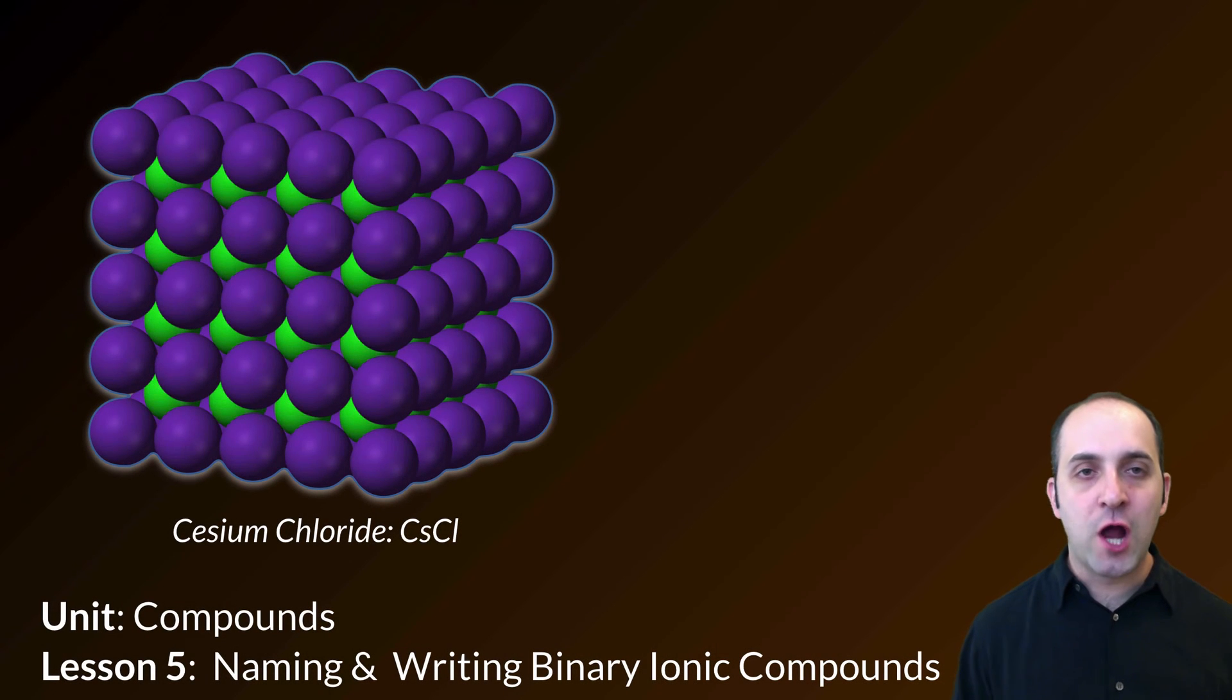Hi, and welcome to Lesson 5 here in our Compounds Unit. Our last couple of lessons have really dealt at looking at covalent structures in depth. We're now going to move to a slightly different area of this unit. We're going to look at the rules that we use when we write chemical formulas and when we determine the names of particular substances.